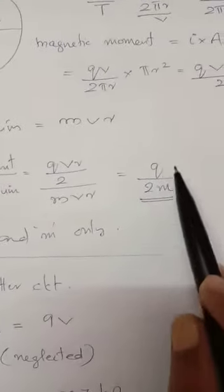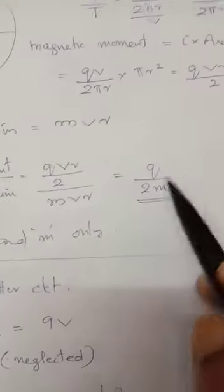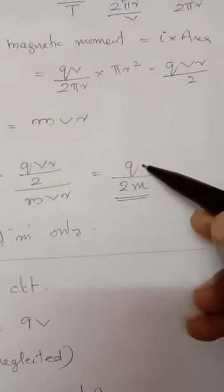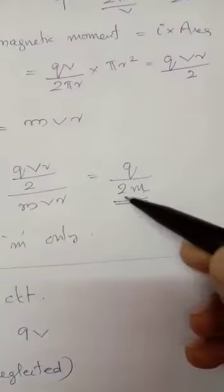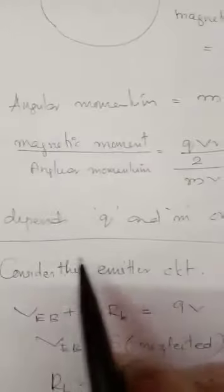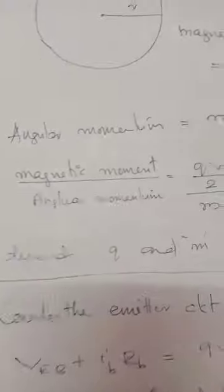Therefore vr terms cancel, you are getting q by 2m. Therefore, the ratio, that is the charge name q by m, that is the specific charge that depends on q and m. Therefore, it depends only on q and m. That is the answer.